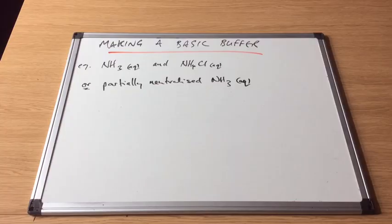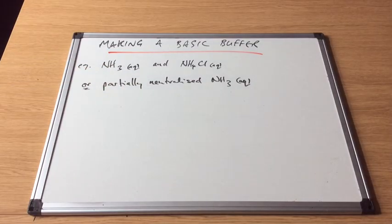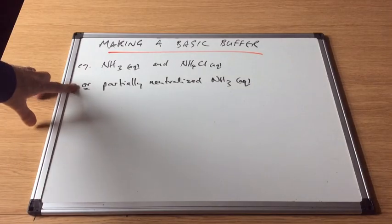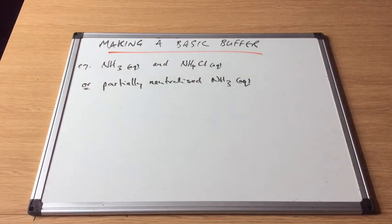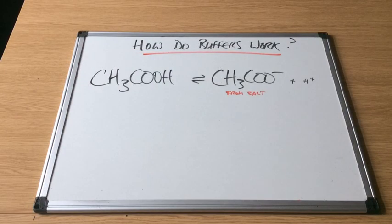For this video we'll concentrate on acidic buffers, but basic buffers can be made in the same way. An example would be ammonia solution as the weak base and ammonium chloride as the salt. You can also partially neutralise the ammonia solution, just as we did with the acidic buffer.